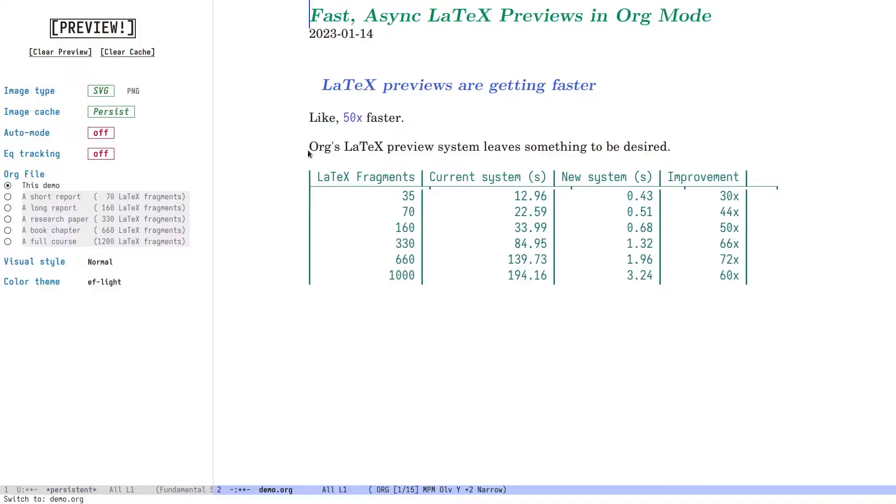We've got good news. Org's preview system has been rewritten almost from scratch. It's now anywhere from 30 to 1000 times faster, and it's asynchronous, so you can continue to use Emacs while previews are generated.